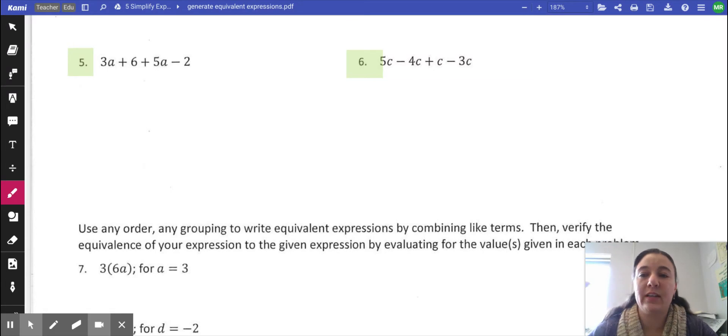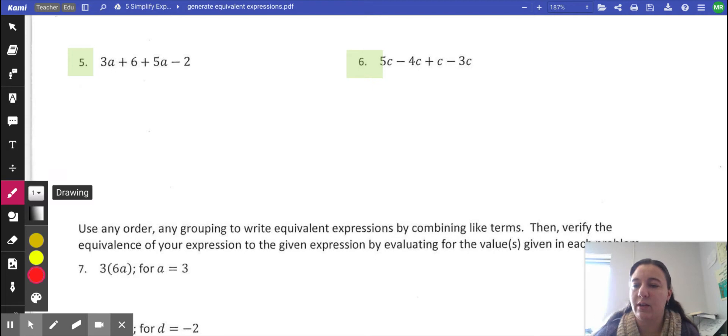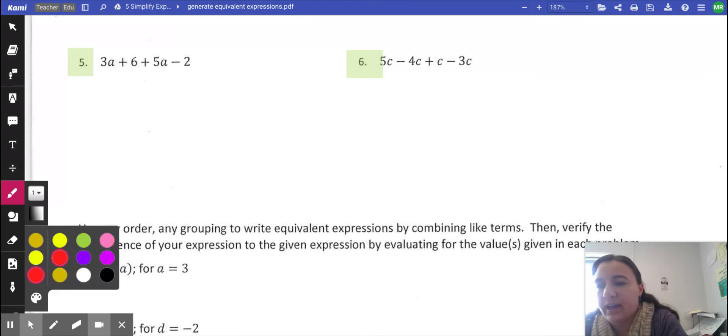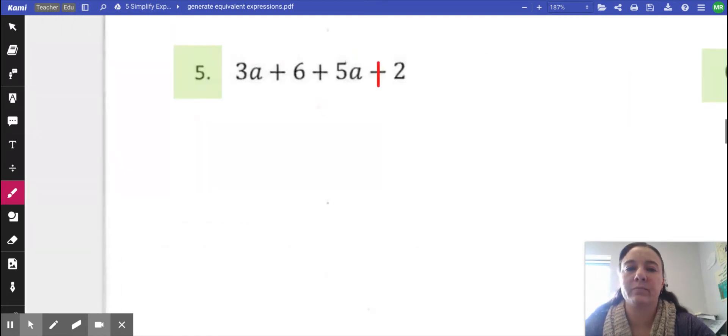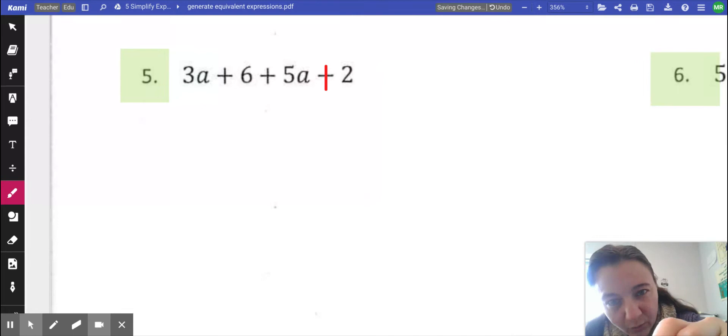So in question five on the second page, it says 3a plus 6 plus 5a minus 2. Rule number one is to always change subtraction to adding the opposite. So I'm going to change that minus 2 into adding the opposite of a regular 2. The next thing we need to do is to be neat and organized.